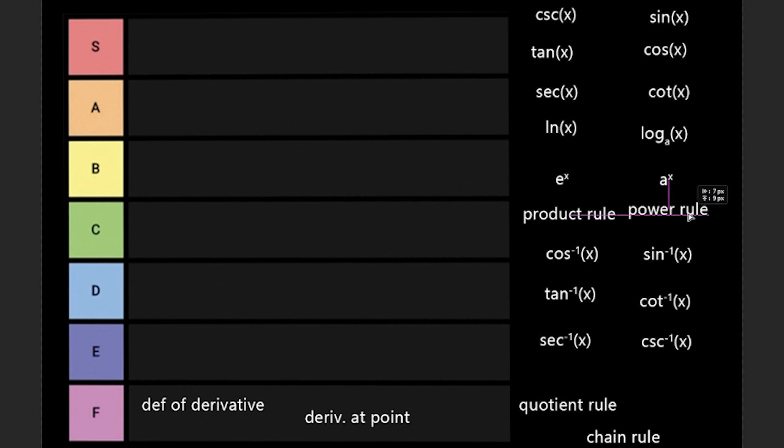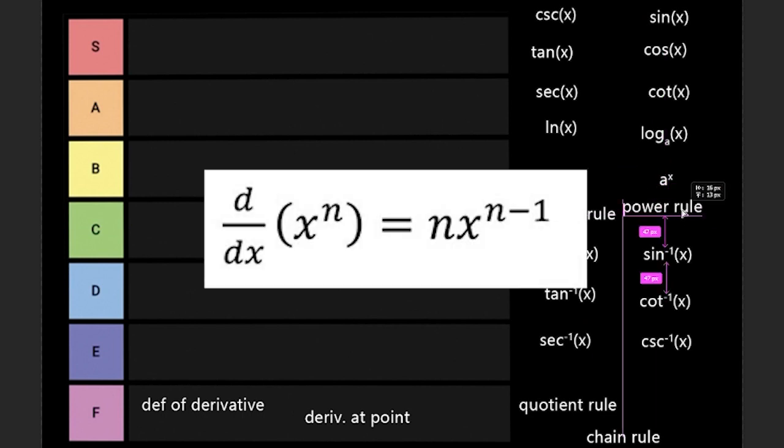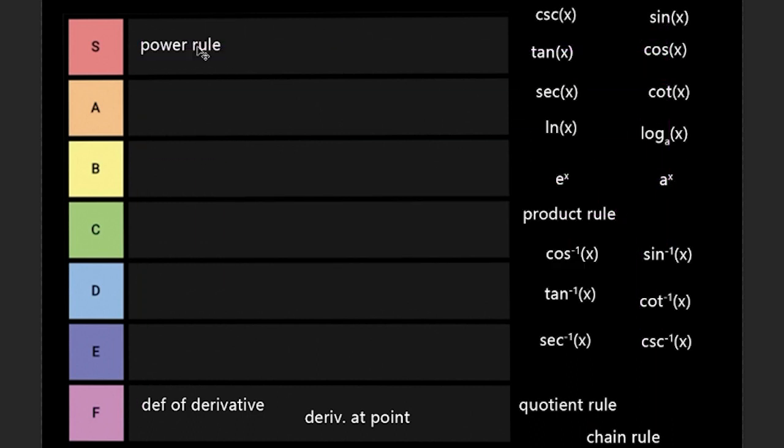Next up is power rule. Power rule is the shortcut. You basically multiply the coefficient of a term by its exponent and subtract one from the exponent and you get the derivative. This is such an easy one. This basically makes every problem super easy and basically saves you so much time. Basically it makes these two invalid. That's why it's S tier.